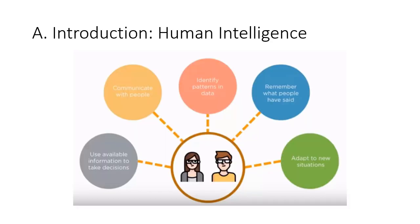As humans, we use our intelligence to do many things. We use it to make decisions, to communicate, to identify patterns in data, to remember what people have said, and to adapt to new situations.